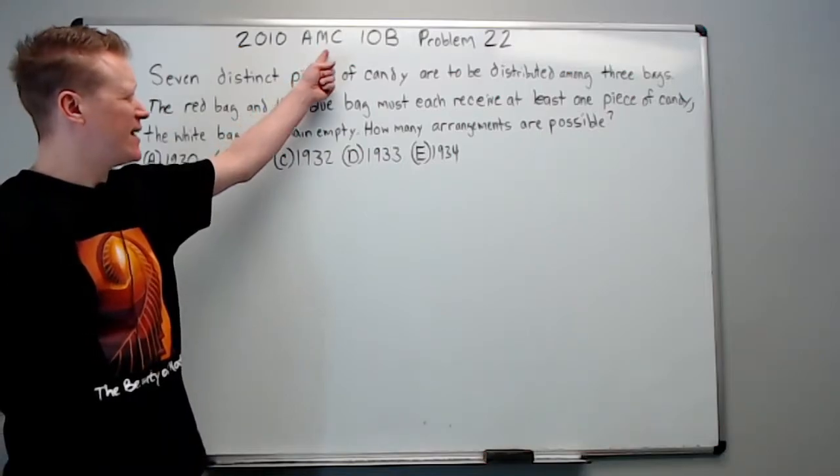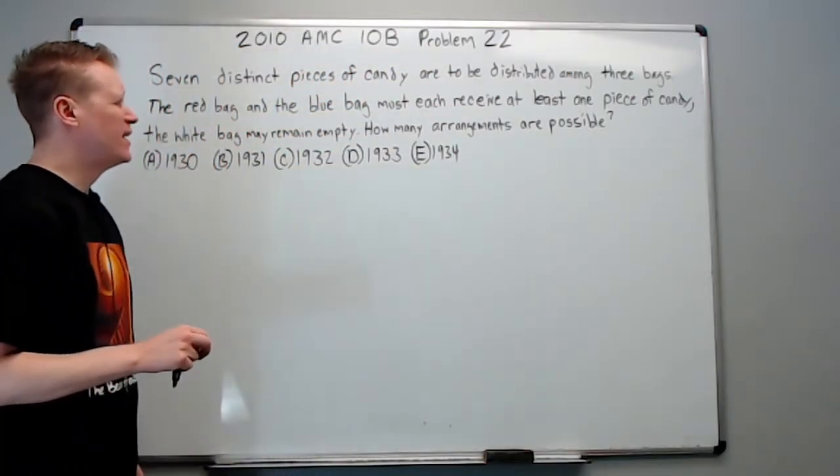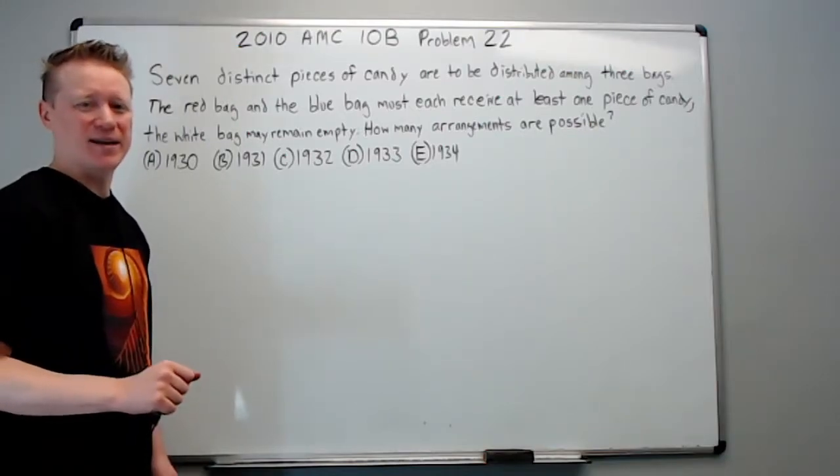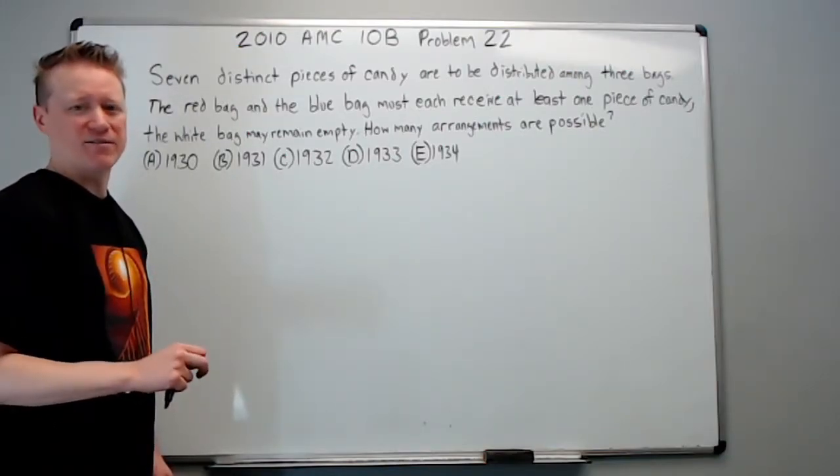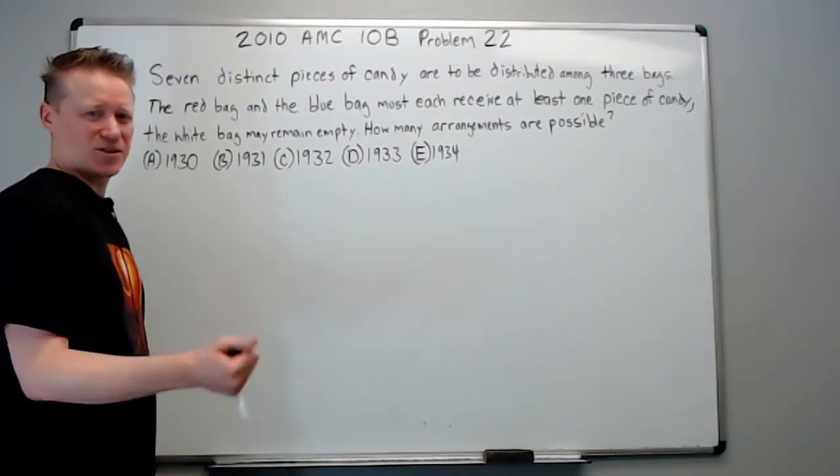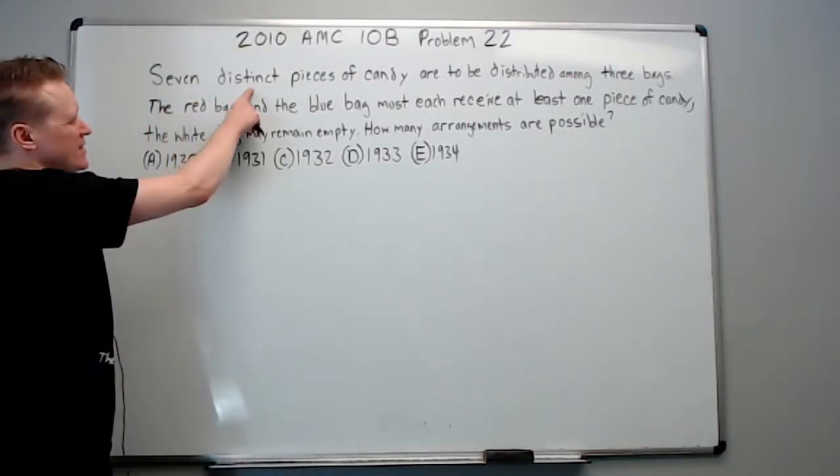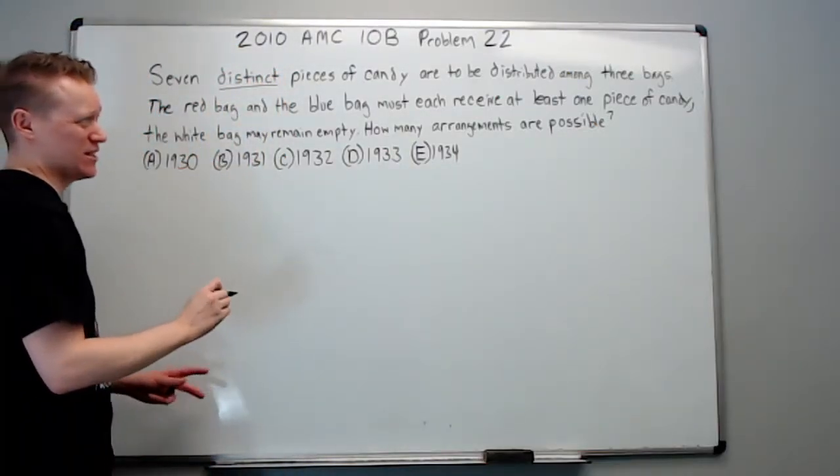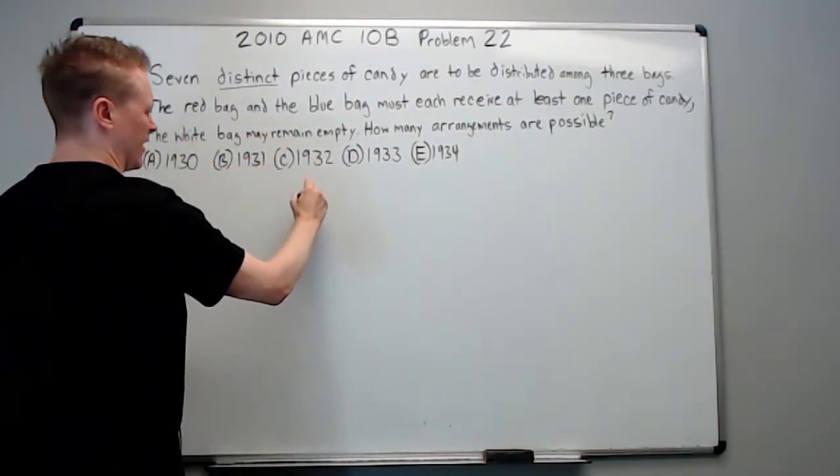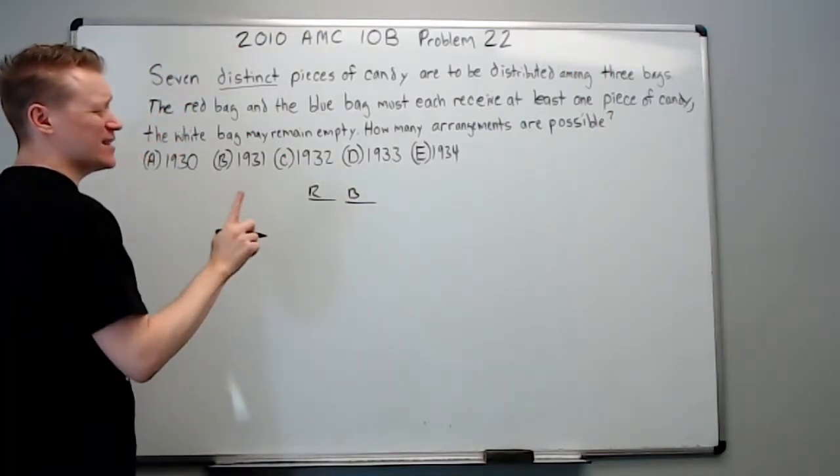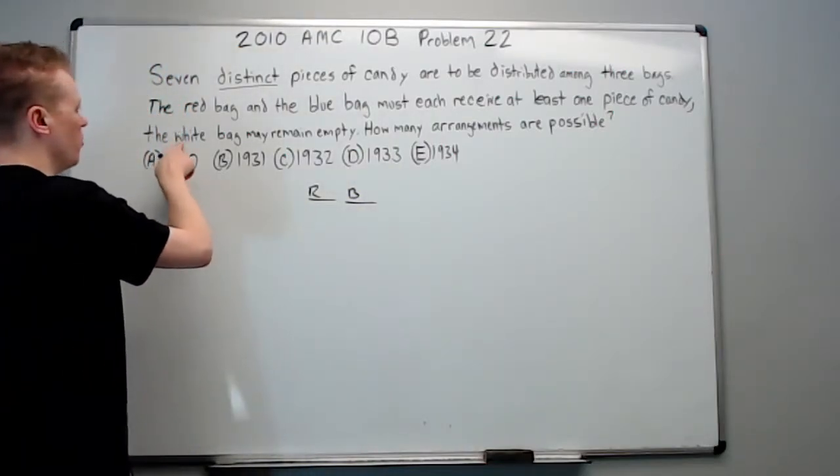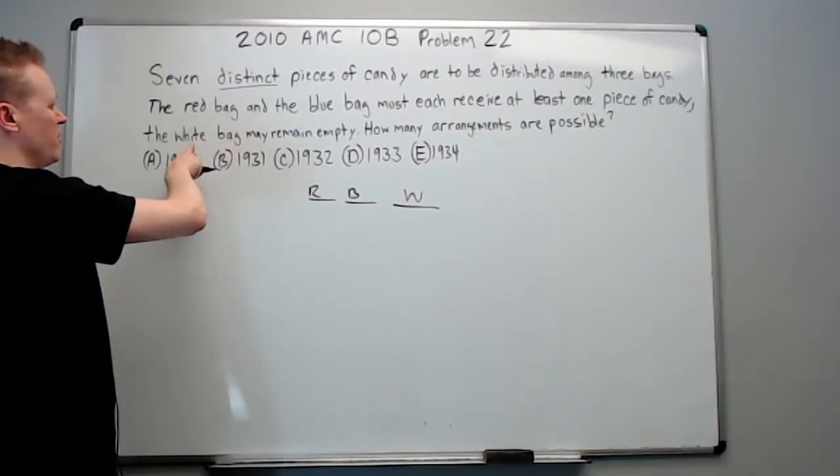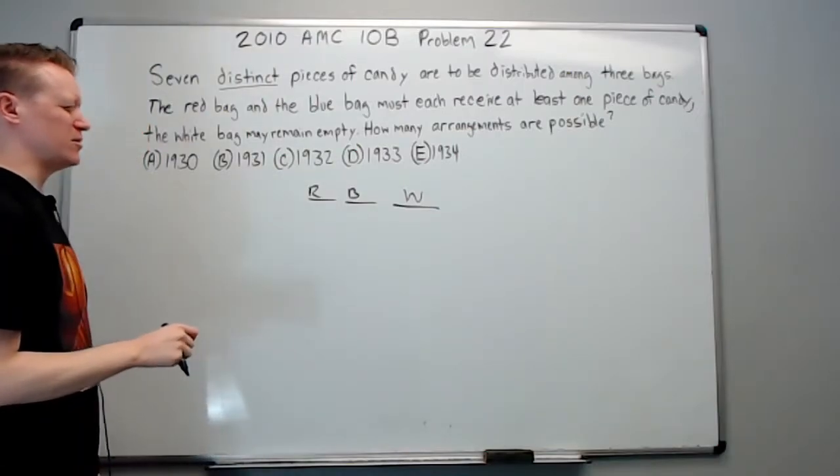All right, continuing on. This is the 2010 AMC 10B, problem number 22. This is going to be a counting problem. If you're looking to gain skill at this type of problem, I highly recommend the Intro to Counting and Probability from Art of Problem Solving. Fantastic book if you haven't done it yet. After that, you can do the intermediate one. Seven distinct pieces of candy are to be distributed among three bags. Okay, so the important thing is they're distinct, so they're different.